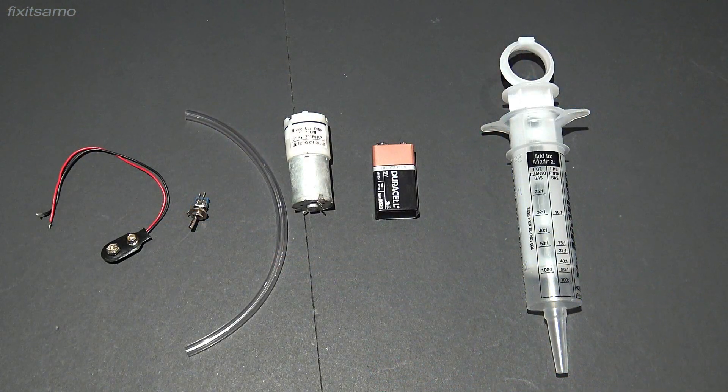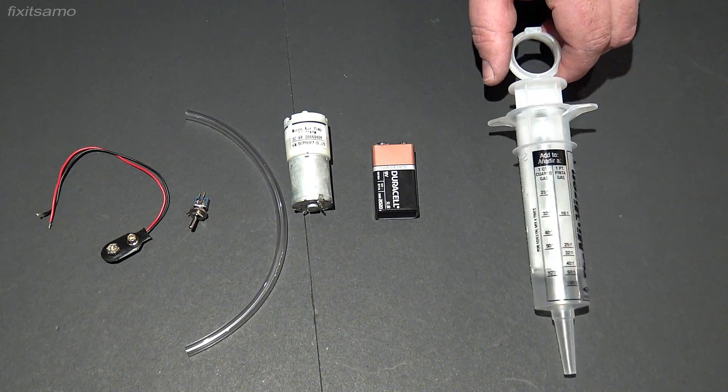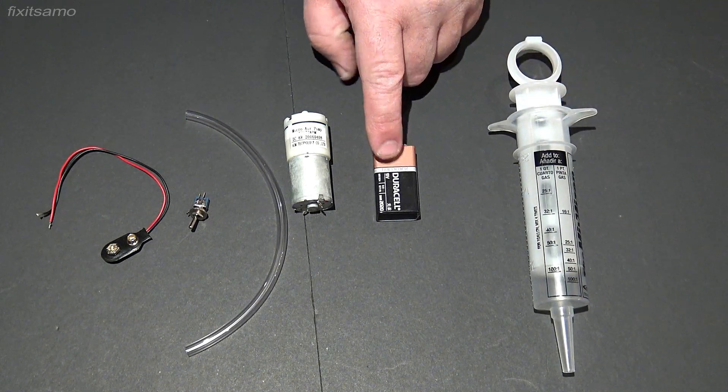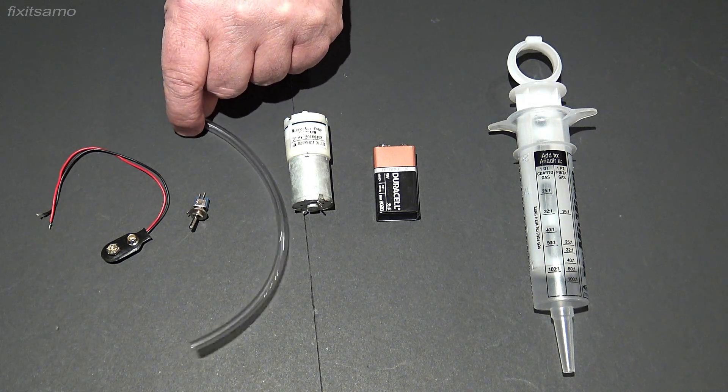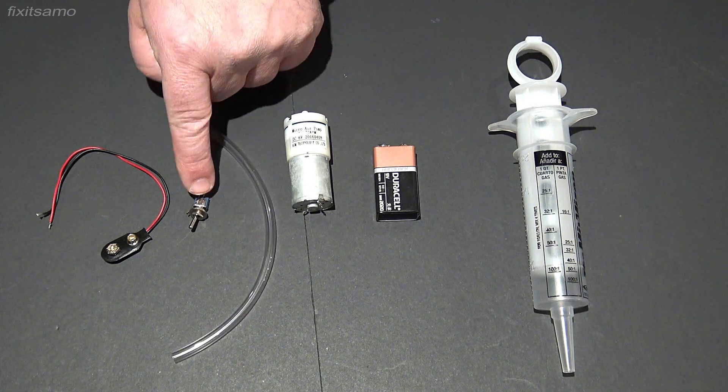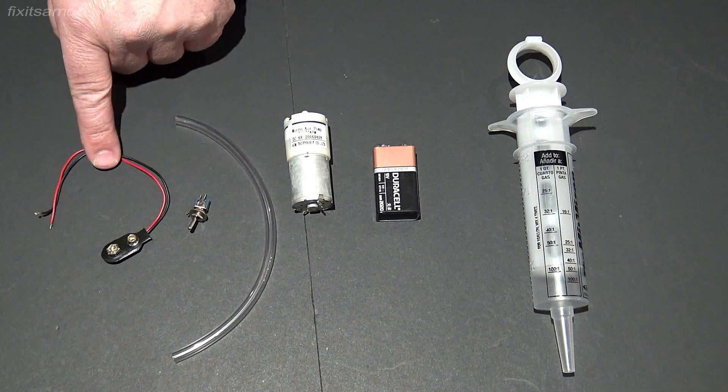Okay so for this project we need a syringe. I got a 20 ounce syringe, 9 volt battery, 6 to 9 volt mini air pump, quarter inch tube like this one, on off switch and a 9 volt connection.